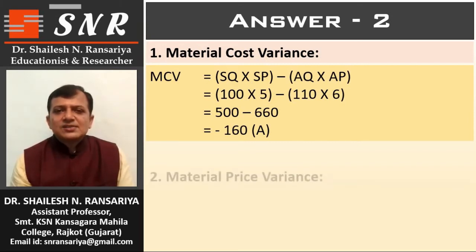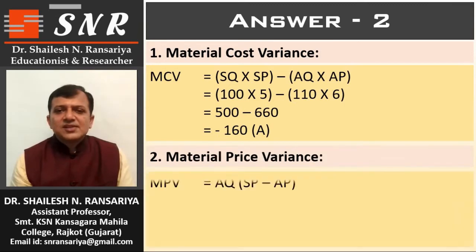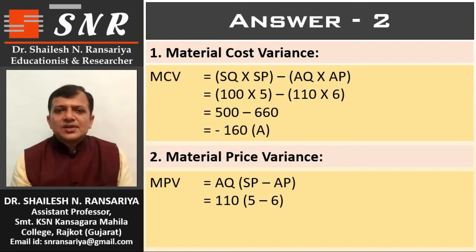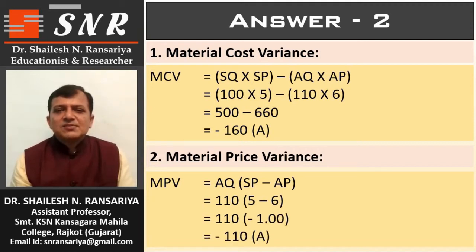Second, material price variance. The formula for this is AQ × (SP minus AP). So, AQ 110 × (SP 5 minus AP 6). So, 110 × minus 1. The variance is minus 110, adverse.